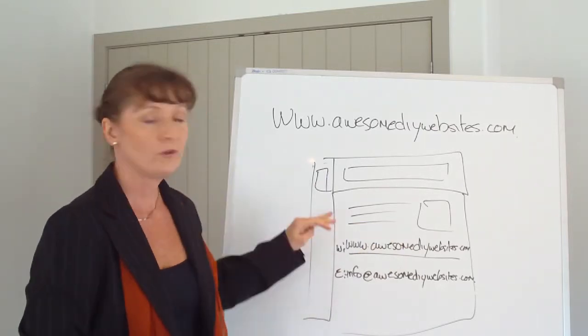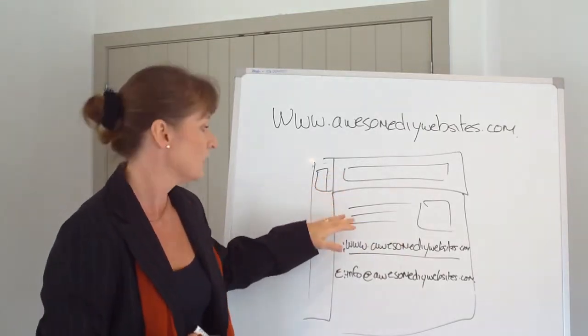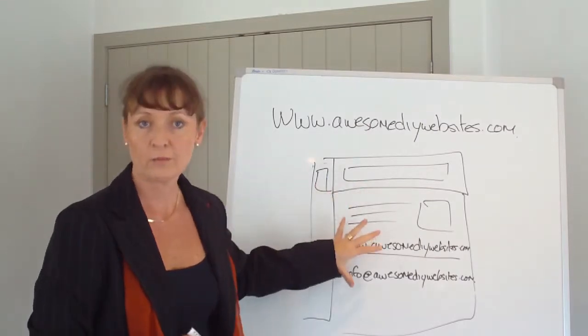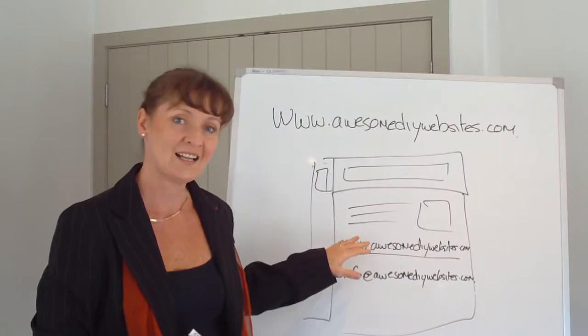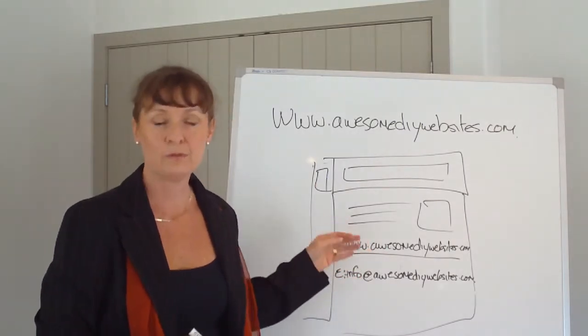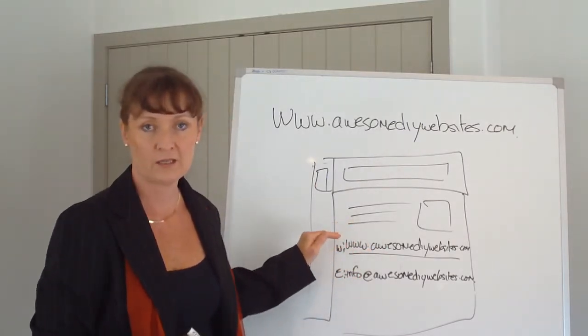So if someone is looking at your particular website, they will click on a button and it will load the page with the information on it. And sometimes you'll see that something is underlined with a different color. Typically it's blue, but people can change the color of what that hyperlink is.